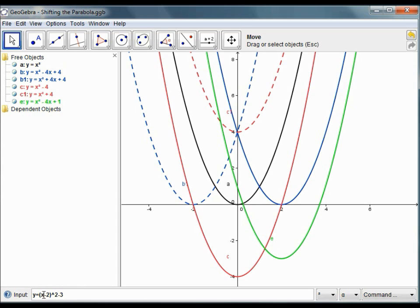I want to move it to the right by 2 units, x minus 2 squared, and I want to move it down by 3 units, minus 3.